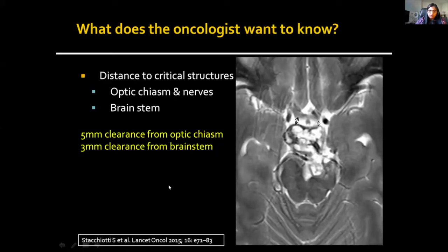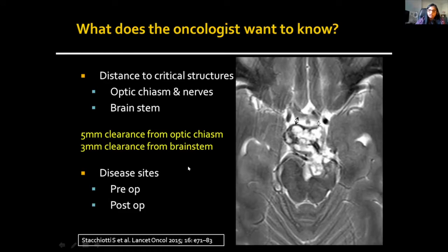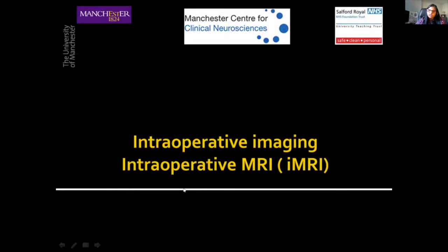What does the oncologist want to know from the preoperative imaging? They are very interested in the distance of the tumour to critical structures — the optic chiasm, optic nerves, and brain stem — because at least 5mm clearance from the optic chiasm and 3mm clearance from the brain stem is needed to enable proton therapy. They also want to know the disease sites not only on the post-op but also pre-op, because both are included in the treatment target volumes.